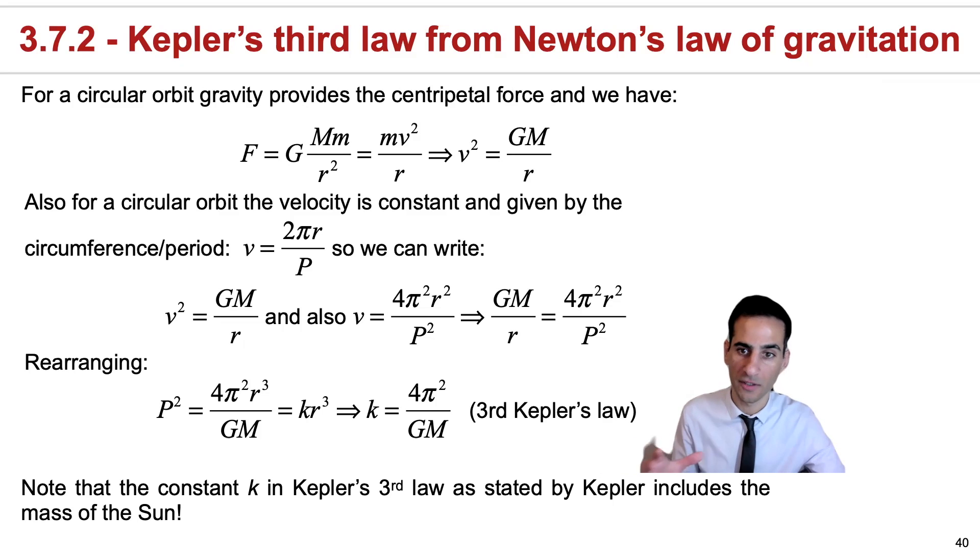That is the reason why for the solar system if we use period in years and the distance in AU because everything is orbiting the sun we can set this constant to one with those units.